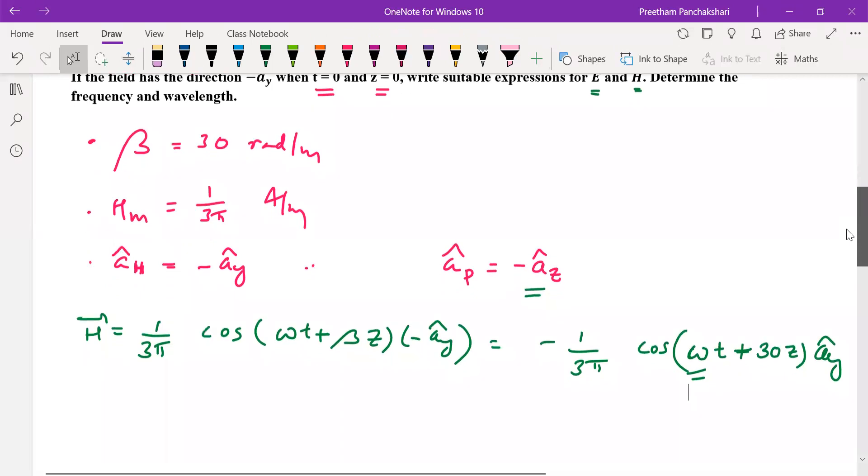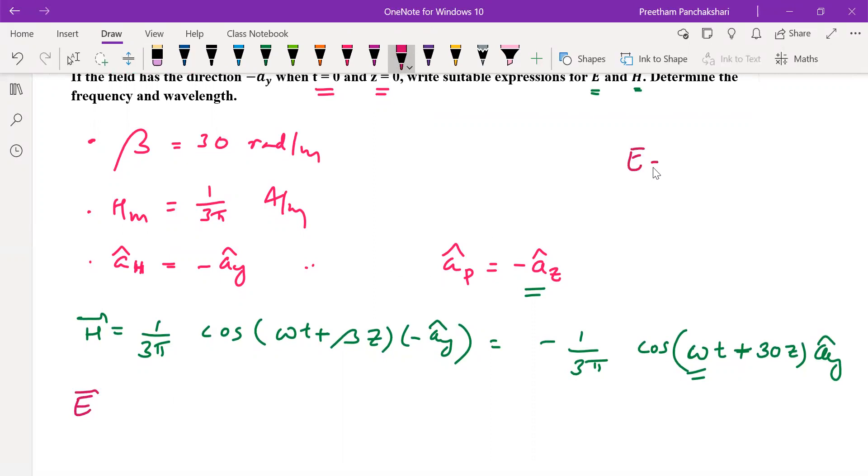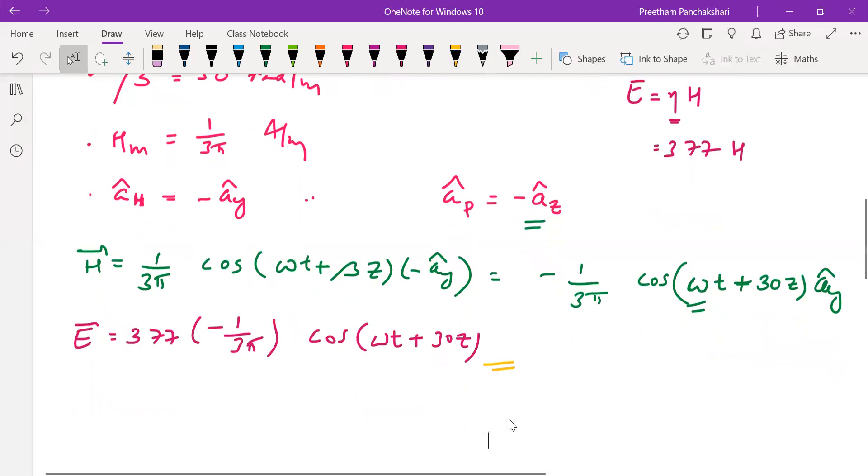Then afterwards, we can convert it to E. Then if you want to write E, we know that E and H are related through intrinsic impedance of the medium η H. So here the medium is free space. So η is 377 ohms into H. So the amplitude of E becomes 377 into amplitude of H. That is minus 1 by 3π into cos ωt plus 30z. And we have to identify the direction of electric field to complete this equation. So what is the direction of electric field?